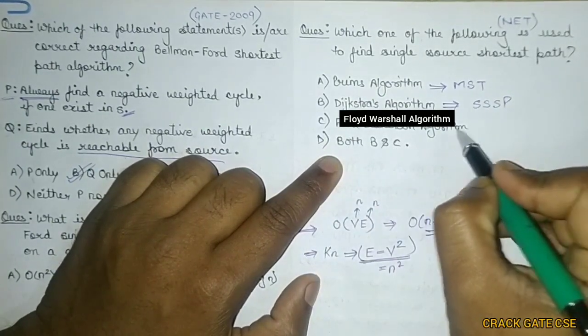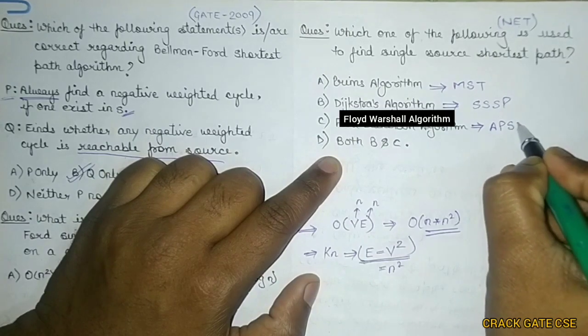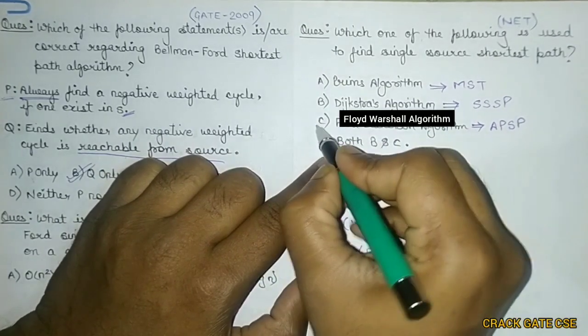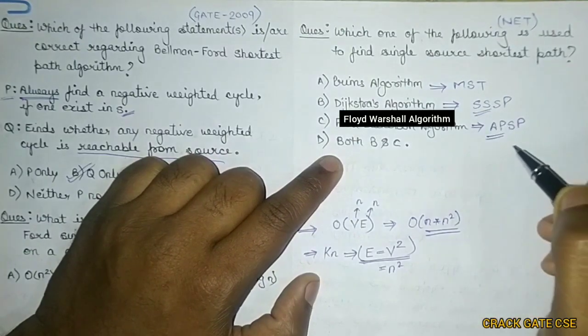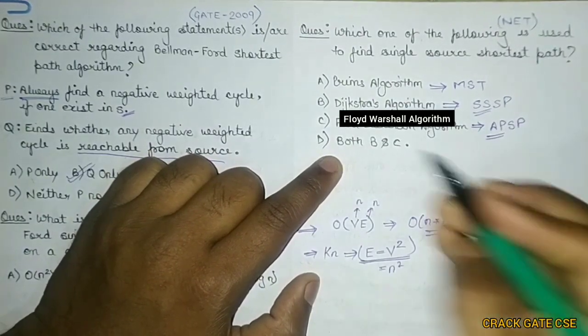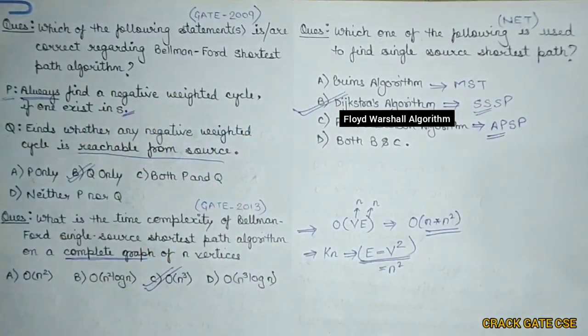And this fourth, Floyd-Warshall algorithm is used for all pair shortest path. So this Floyd-Warshall is used for all pair. That is not related to the single pair. So what we can see is that the Dijkstra algorithm is used to find out the single source shortest path.